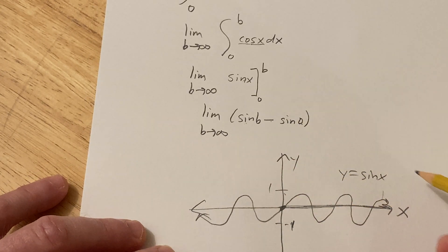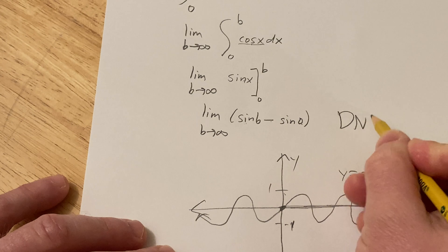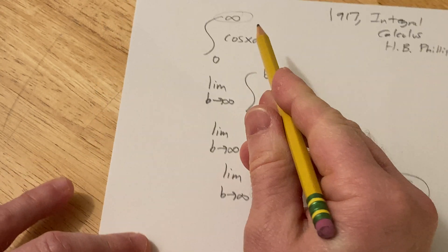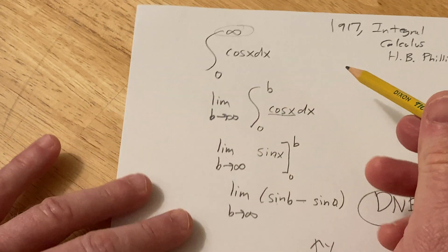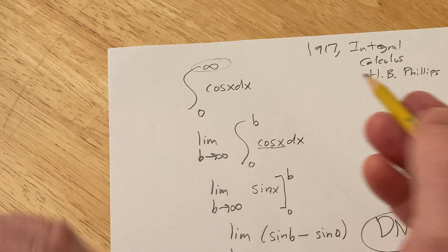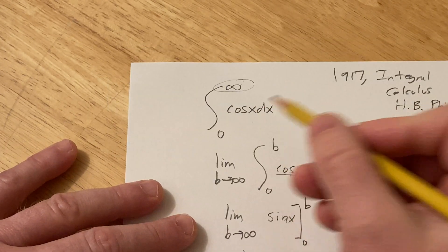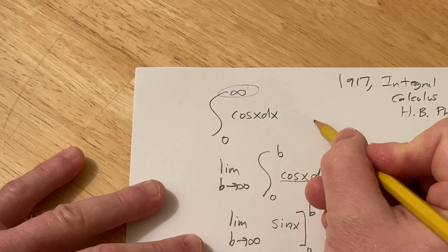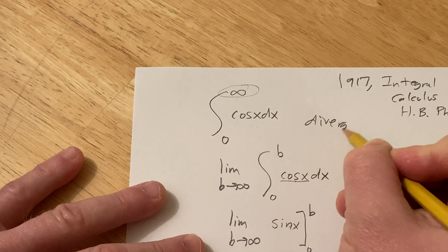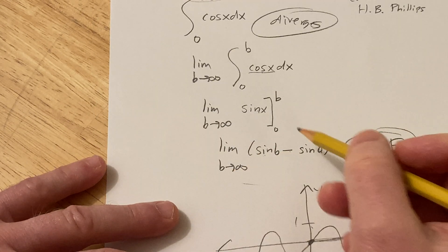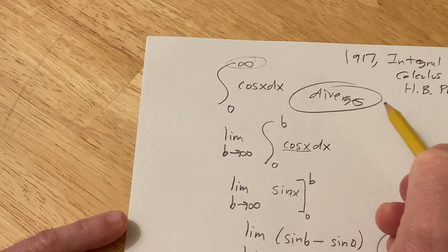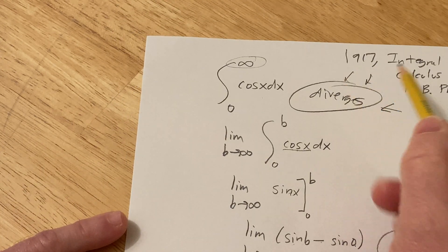So this doesn't approach any particular value. So this limit does not exist. Therefore, this integral does not exist. The terminology we would use in mathematics to say that the integral does not exist is we would say the integral diverges. So whenever you have this limit and it does not exist, you could say that the integral diverges.